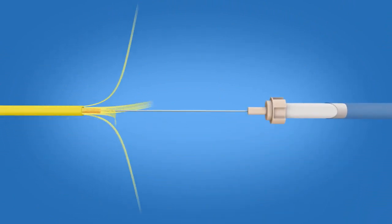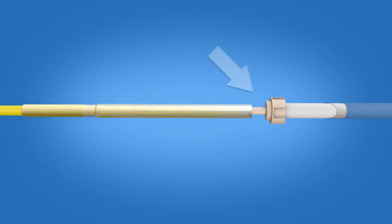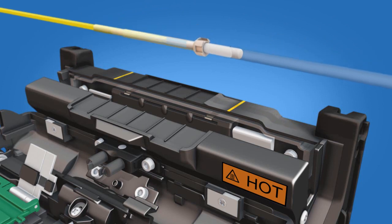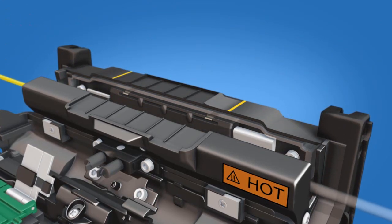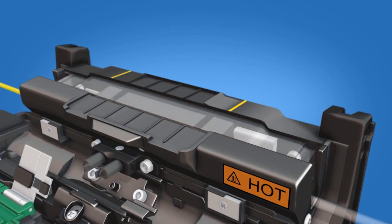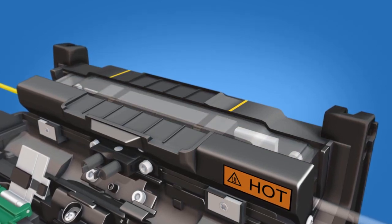Slide the protective sleeve over the splice so that it is flush with the ferrule unit. Position the sleeve in the center of the heater while continuing to maintain contact with the ferrule. Heat the protective sleeve. Allow the sleeve to cool before removing it from the heater.